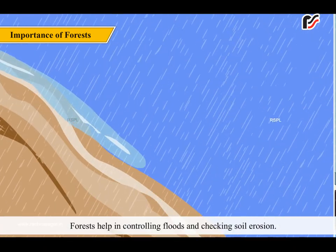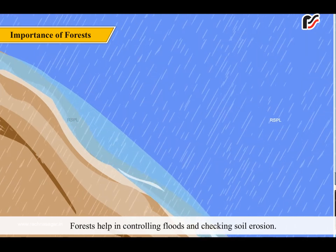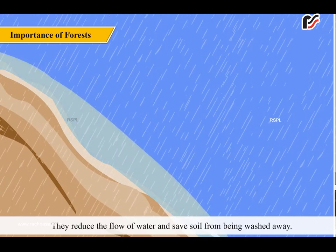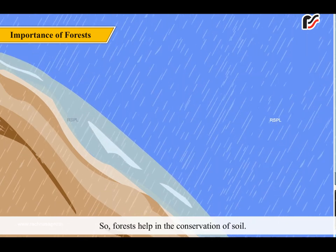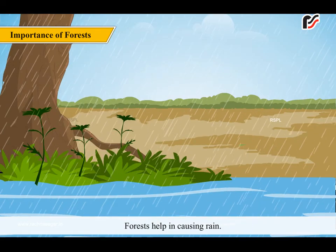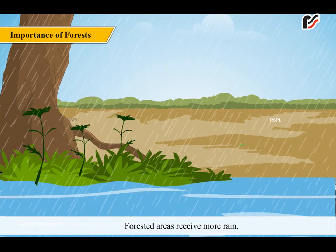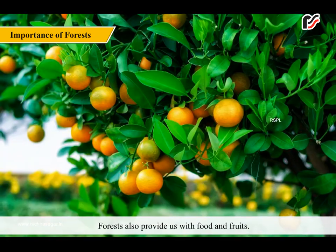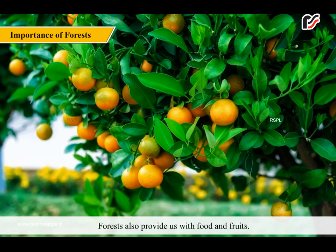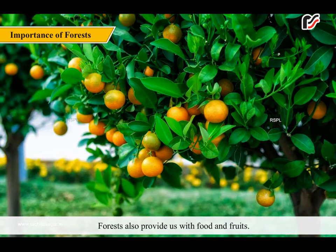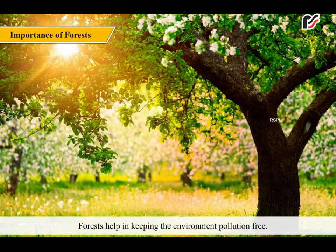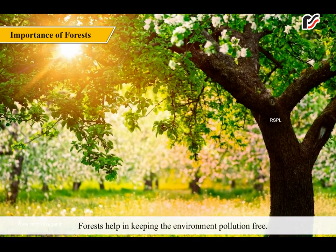Forests help in controlling floods and checking soil erosion. They reduce the flow of water and save soil from being washed away, thus helping in the conservation of soil. Forests help in causing rain, and forested areas receive more rain. Forests also provide us with food and fruit, and help in keeping the environment pollution free.